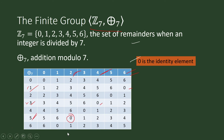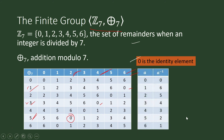It's easy to find inverses under addition modulo 7: any pair of integers whose sum is 7 are inverses of each other. So 6 is the inverse of 1, and 1 is the inverse of 6. The inverse of 3 is 4 because 3+4 mod 7 = 0.